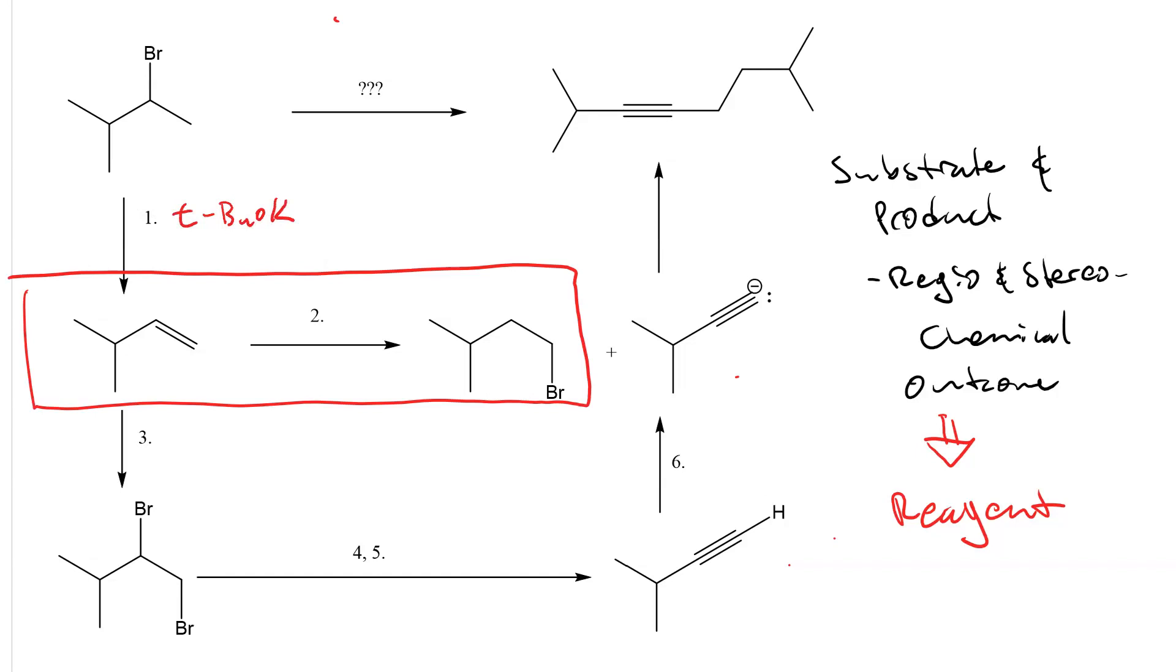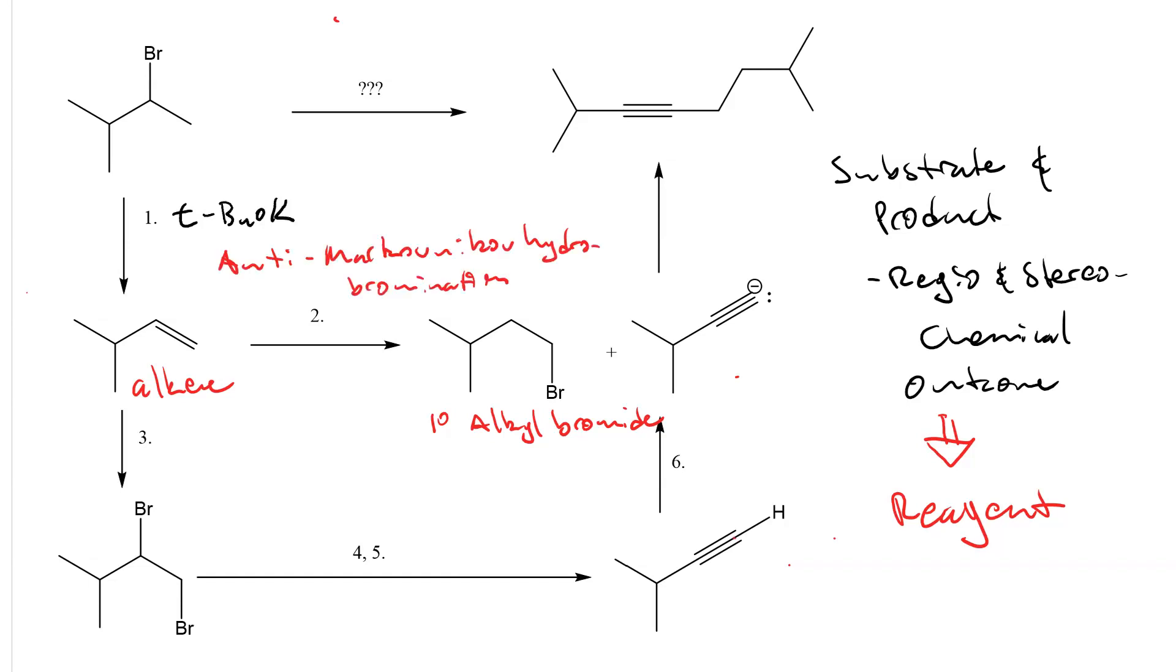Now, let's look at our second step. Our substrate is an alkene. Our product is a primary alkyl bromide. This is anti-Markovnikov hydrobromination. Anti-Markovnikov because the bromine ended up in the less substituted position and the H in the more substituted position. The reagents you need for anti-Markovnikov hydrobromination are HBr and peroxide, ROOR.